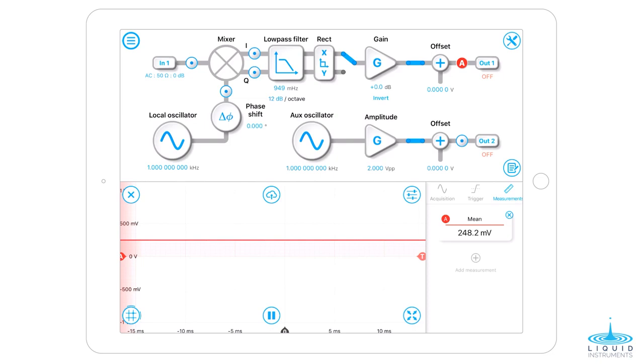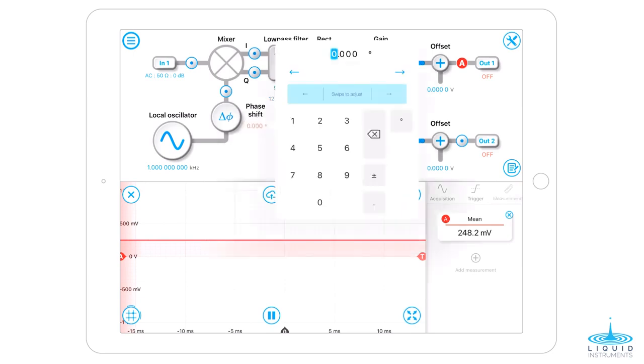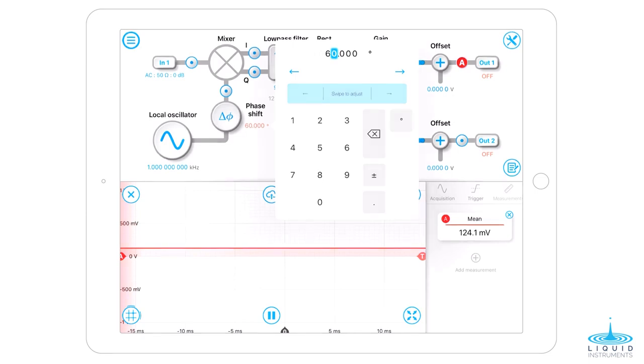Next, we adjust the phase of our local oscillator by swiping. We can clearly see, as we increase the phase difference, the signal gets weaker and weaker. At 60 degrees, the signal is half of its original amplitude. Let's verify the math.